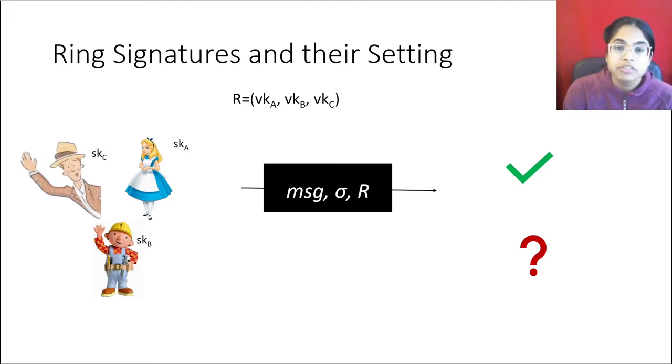That leads us to our security properties. A ring signature should be unforgeable, meaning that you really do need to have a secret key within the ring to produce a signature. A ring signature should also be anonymous, meaning that no external observer can tell from whom that signature came. Notice that with an external observer, that can be anybody that's not in the ring, as well as non-signers in the ring. So except for process of elimination where they know that it's not them, they can't tell which signer it was.